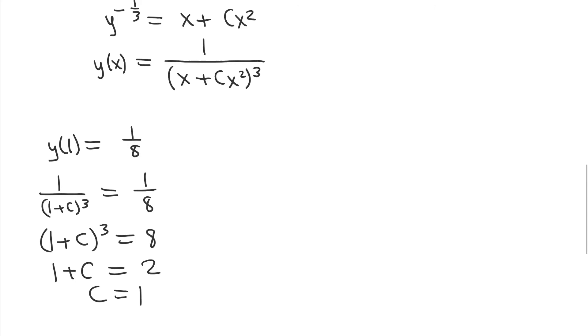And so my final answer, my particular solution, is y of x is equal to 1 over x plus x squared, all cubed. Now, keep in mind that this function, because our initial condition was y of 1, right, the x value was 1, notice that this function is not defined at x equals 0. And so this particular solution is a solution to the initial value problem on the interval from 0 to infinity. We take the largest interval that contains the initial value that y is continuous on. So y is continuous on 0 to infinity, and that's the interval that contains the initial value.